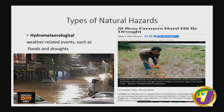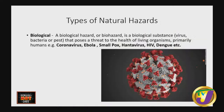Our last hazard category for today is biological hazards. These are hazards associated with living organisms that have the potential to damage other organisms - and of course, we are those organisms. Examples include coronavirus, Ebola, smallpox, hantavirus, HIV, and dengue. All of these have the potential to seriously affect the human population.